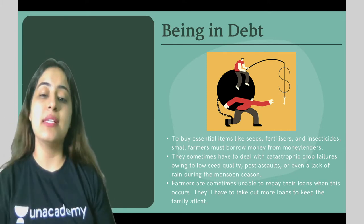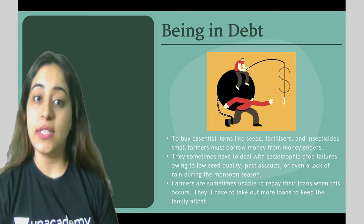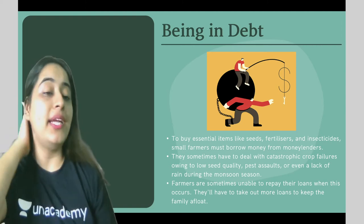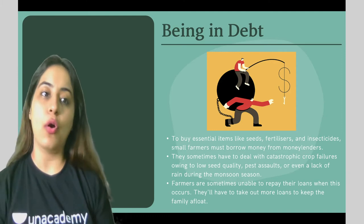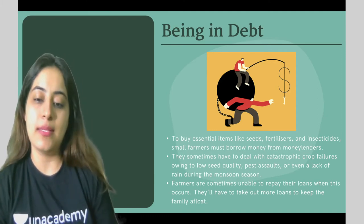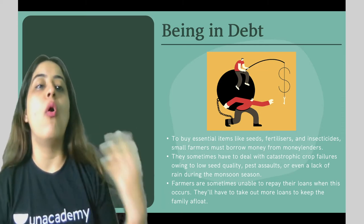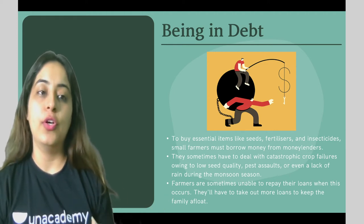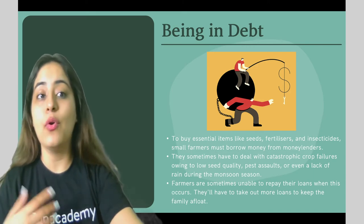Farmers are sometimes unable to pay their loans when crop failures occur. Because of these failures, farmers can't repay the money they borrowed. They don't have crops to sell, so they have no income. They then have to take additional loans to pay off existing loans and to keep their family afloat with daily food needs.